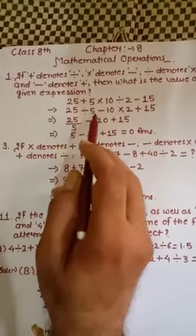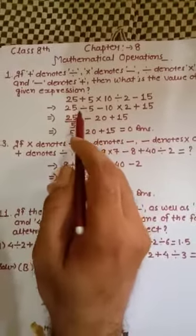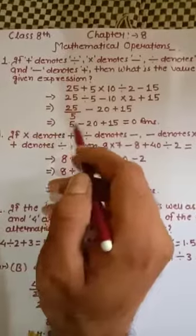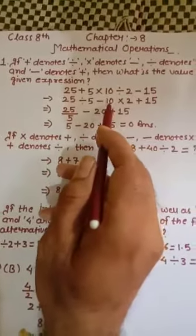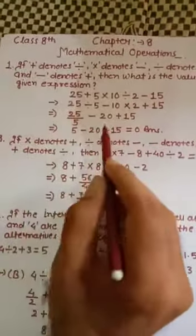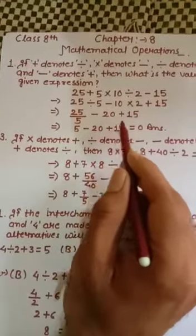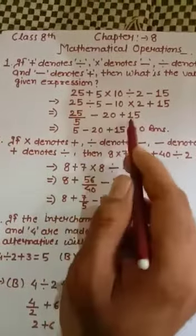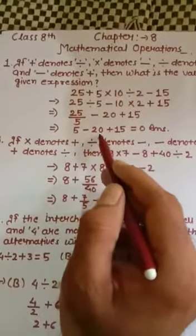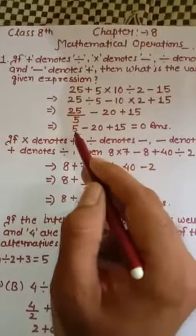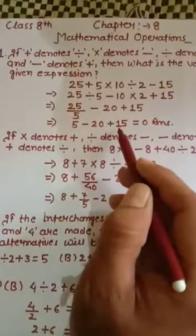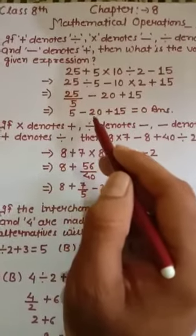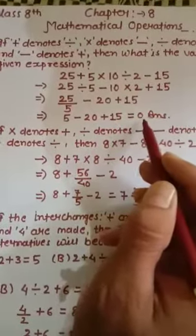So 25 should be divided by 5. According to BODMAS, first we divide: 25 divided by 5 gives us 5, then it will be multiplied by 2, giving us 20. Plus 15 remains as it is. So after solving, the expression becomes 5 minus 20 plus 15. Positive 5 plus 15 equals 20, and 20 minus 20 gives us 0 as the answer.